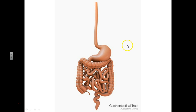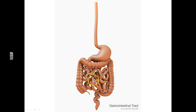Here's your digestive tract a little more accurately. Here's your esophagus. Your stomach leads to your very, very long small intestine where food is absorbed. Then to your large intestine, through your rectum, and out the anus. By the way, that's your appendix there.